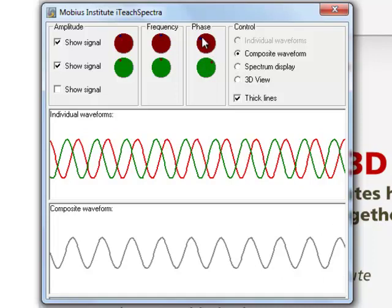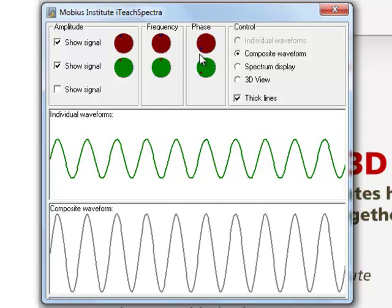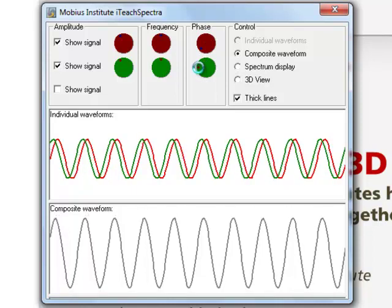That's better. And so if we set them for example both to zero phase, the two signals are adding together. You can see now the green one is covering the red one, that means they're both exactly the same amplitude, frequency and phase. But if I shift the phase of one of them...